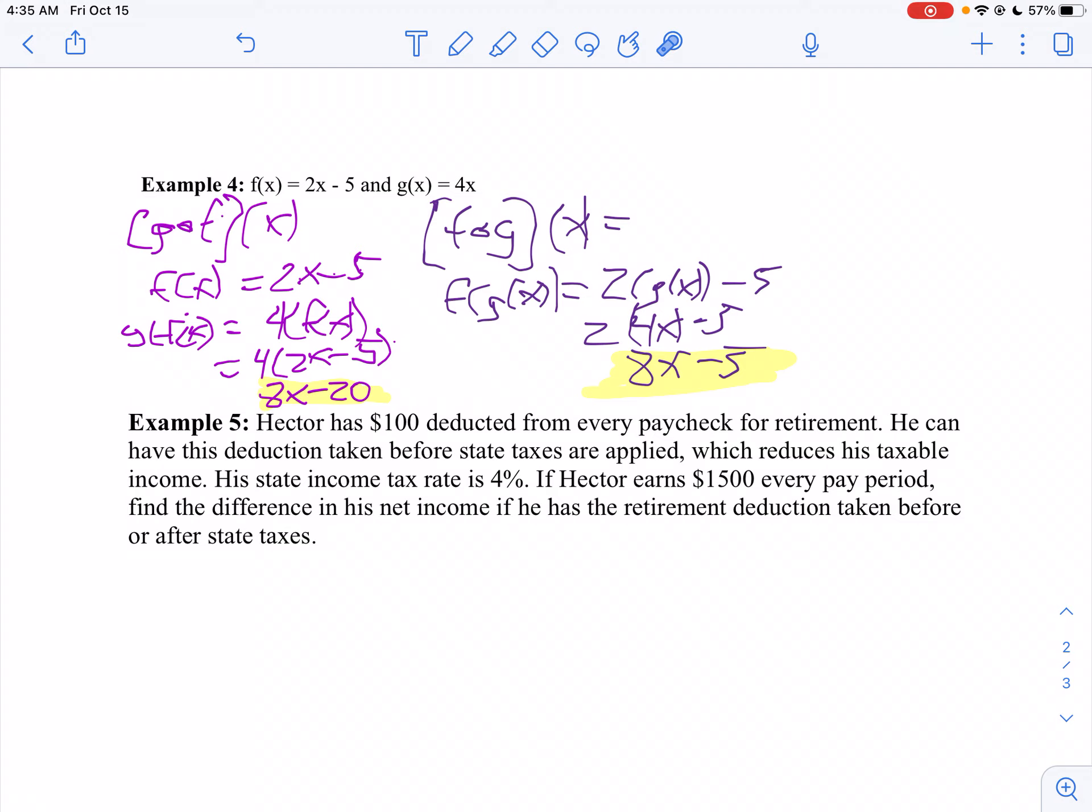So let's do no deduction first. So he's going to pay 4% of $1,500. If I take 1,500 times 4%, we get $60. So his take-home pay, we take off that $60, he's $1,440. Then we're going to subtract the $100, and he'll take home $1,340.